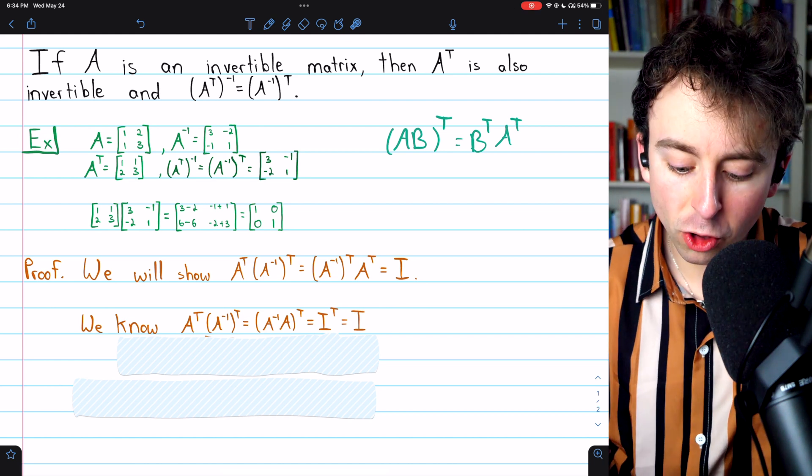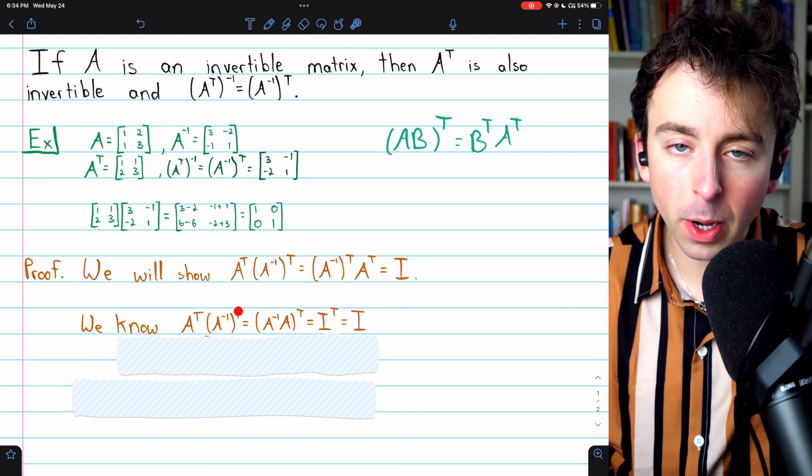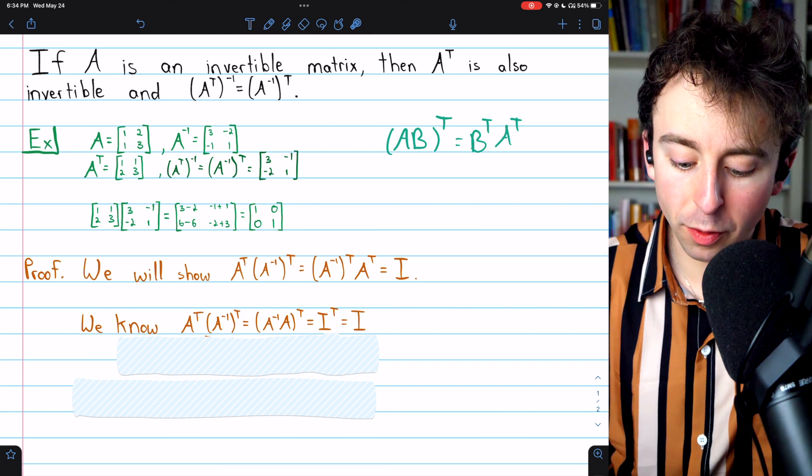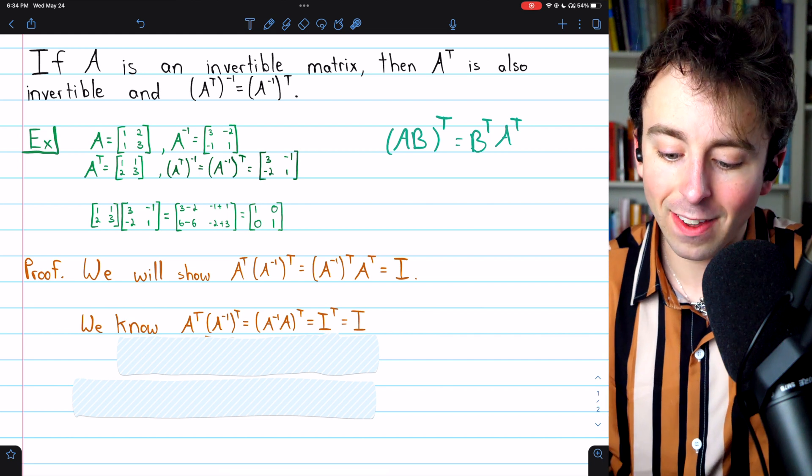So in trying to show that A inverse transpose is the inverse of A transpose, we're halfway done. We've shown that if you multiply them in this order, you get the identity.